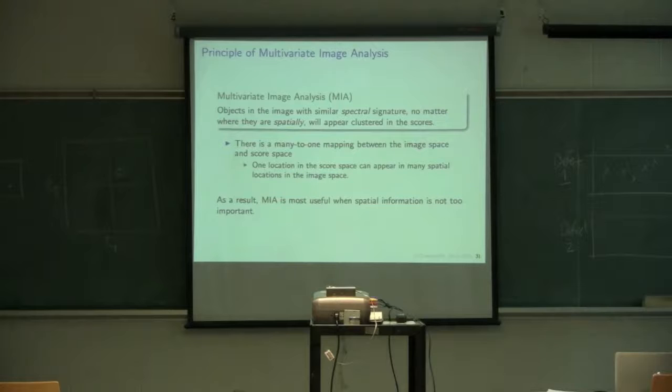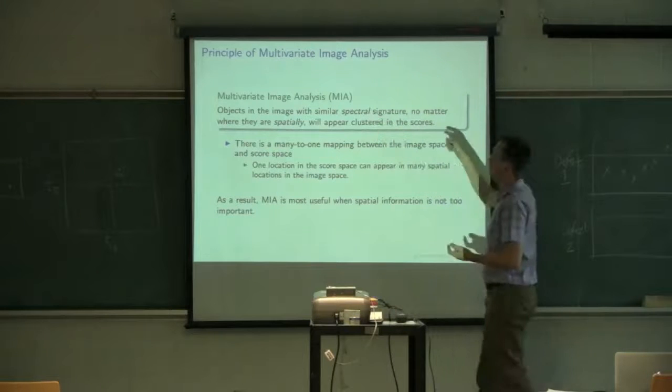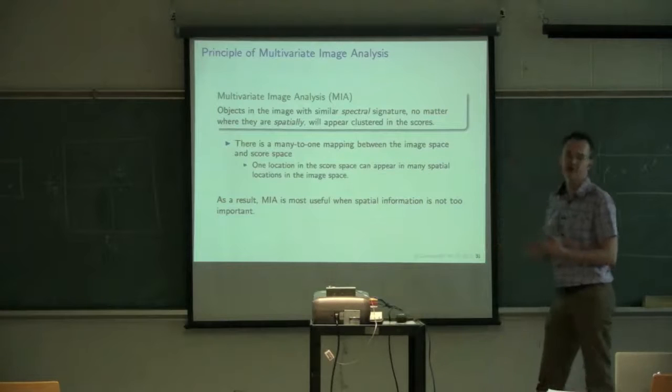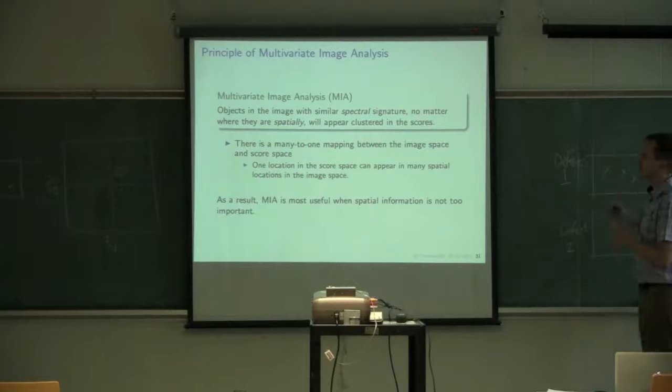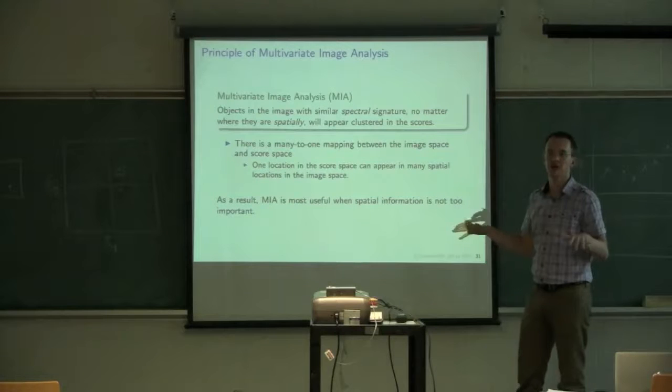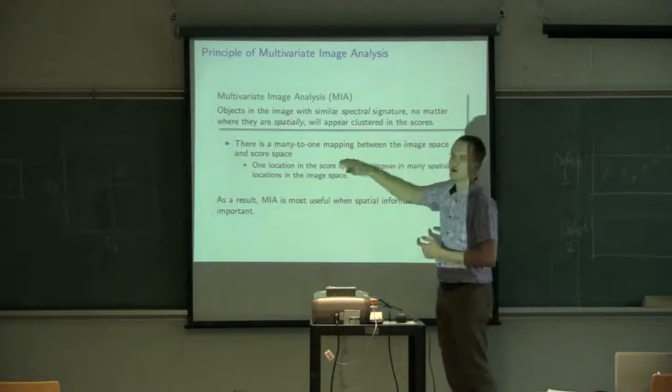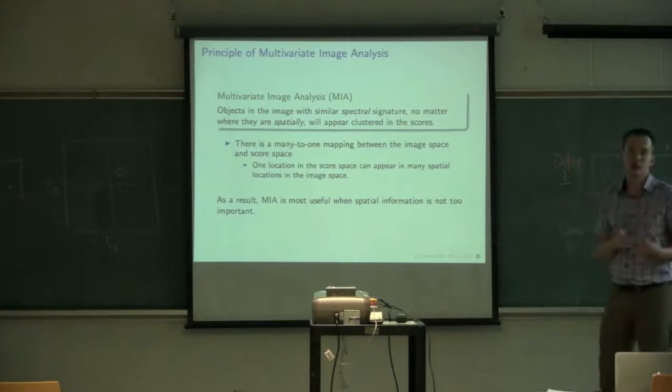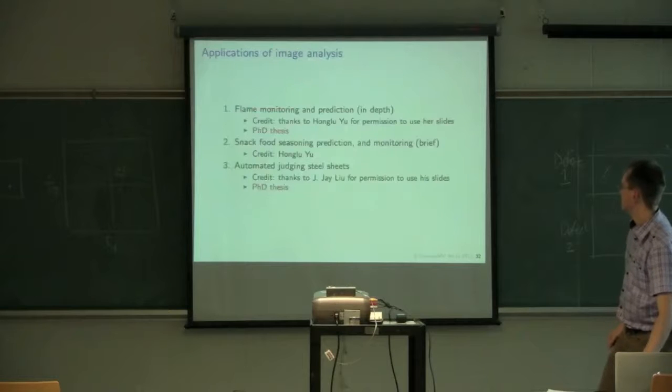So just to summarize what MIA is doing here before we move on to the applications. Objects in the image that have the same spectral signatures, the same wavelength characteristics, no matter where they are spatially in the image, they could be anywhere, they will appear in the same region of the score space. So as a result, we say there's a many to one mapping between the image space and the score space. One location in the score space, one T1, T2 location in my score space, if I map that back to the image space, that can correspond to multiple pixel locations back in the original image. But many pixels in the original image with the same spectral signature will appear in one location in the score space.